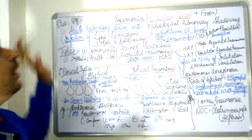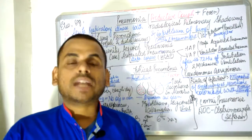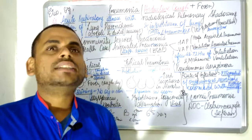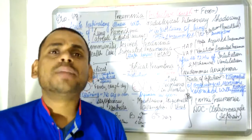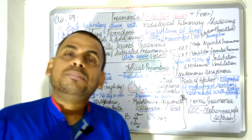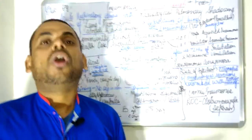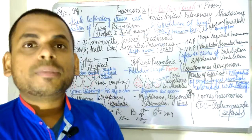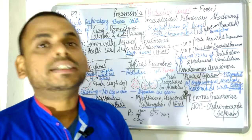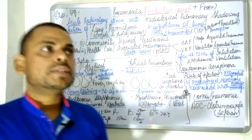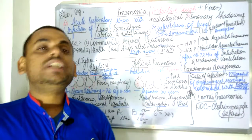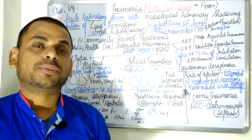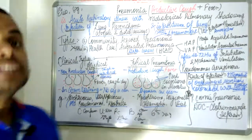Looking at the etiology of pneumonia: pneumonia mostly occurs at the extremes of ages — that is, it can either manifest in very young children or in very older individuals. The most common season for pneumonia is the winter season. The chief etiological agent is the microorganism Streptococcus pneumoniae.